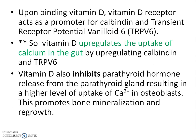Upon binding vitamin D, the vitamin D receptor acts as a promoter for calbindin and transient receptor potential valenoid 6, otherwise abbreviated as TRPV6. So vitamin D upregulates the uptake of calcium in the gut by upregulating calbindin and TRPV6. Vitamin D also inhibits parathyroid hormone released from the parathyroid gland, which results in a higher level of uptake of calcium 2+ in the osteoblasts, promoting bone mineralization and regrowth.